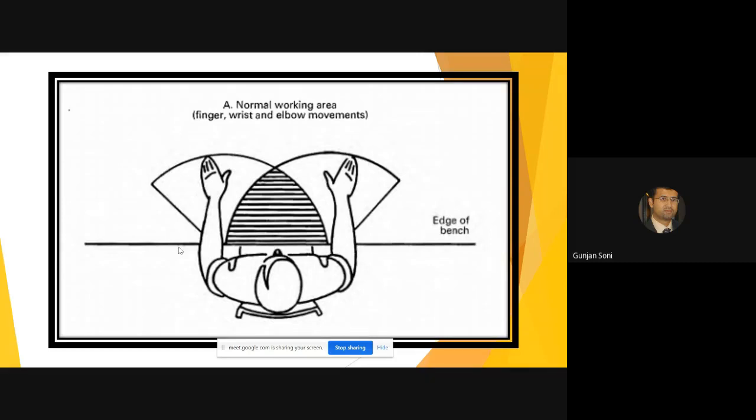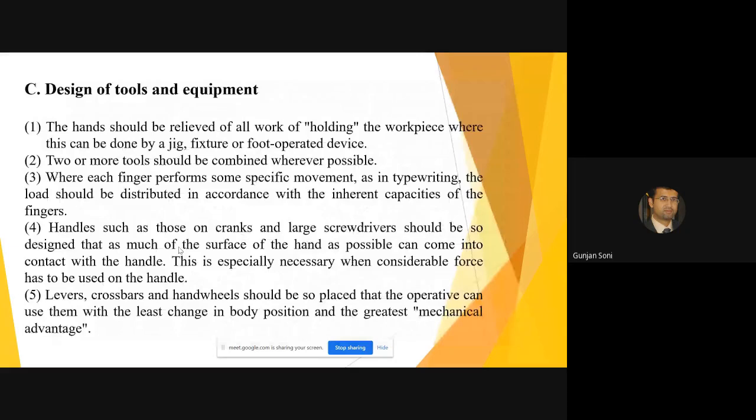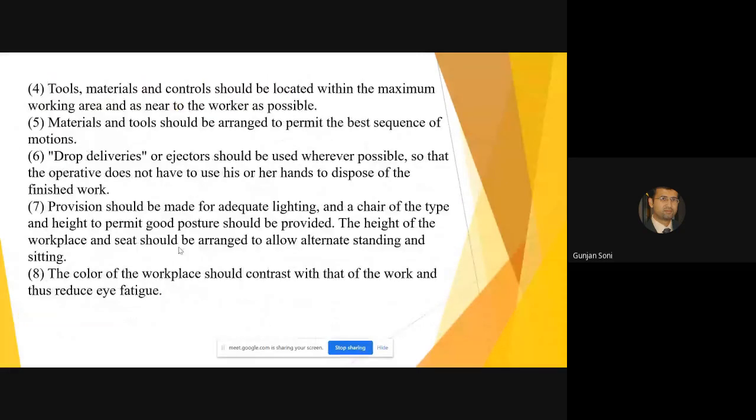Then you have design of tools and equipment, which says that hands should be relieved of all the work holding as much as possible. If I need a screwdriver, I should not have to carry it in my hand. There could be an arrangement of tools which are hanging above you. Whichever tool you need, you can pull it down and use it. I think I did include videos somewhere where you have an arrangement of overhead hanging tools. You must have seen in the car workshop that these tools they keep hanging and then they pull it and use it and then again it gets retrieved by spring.